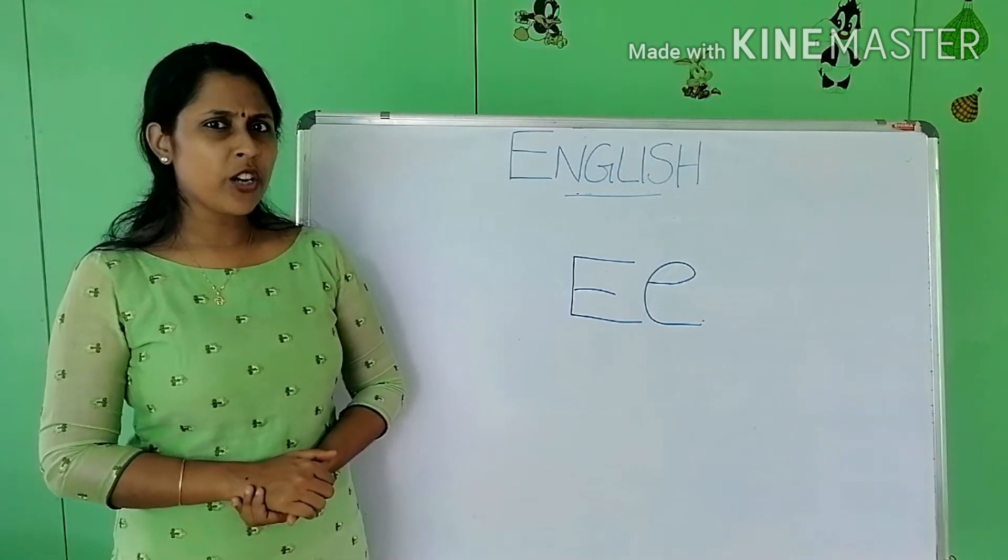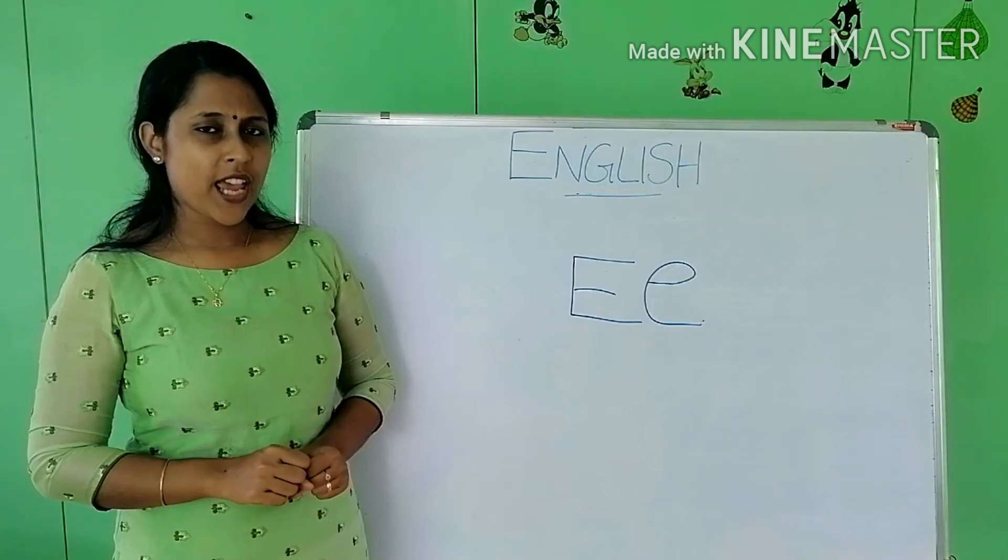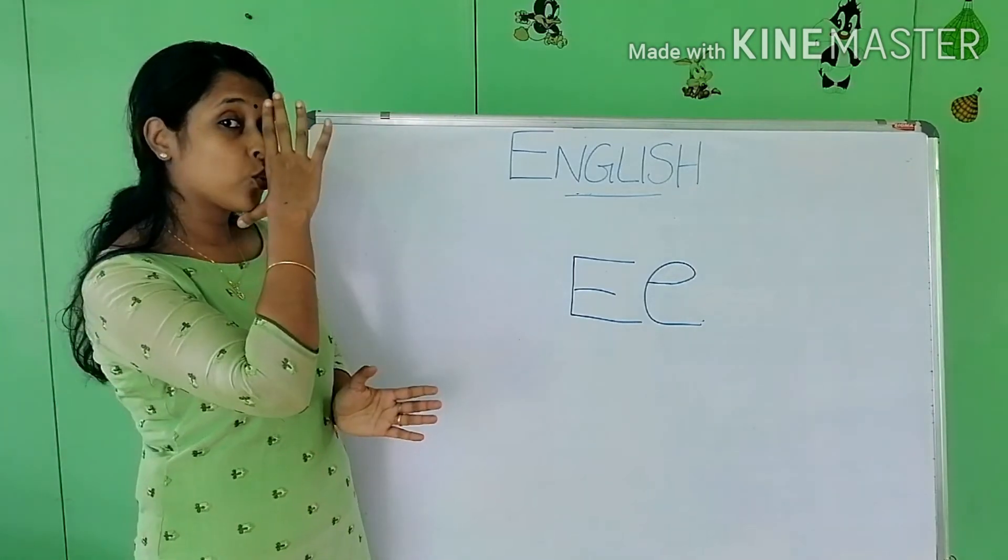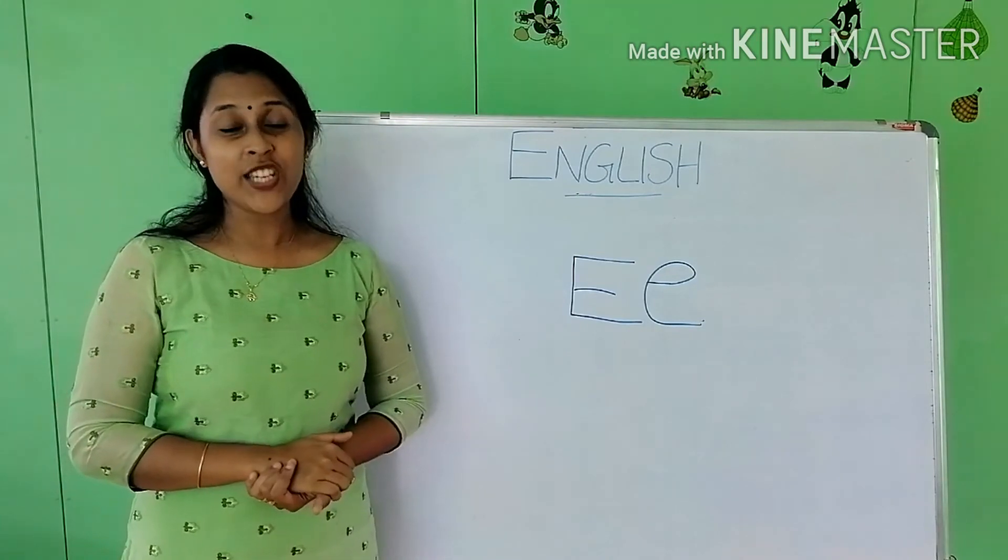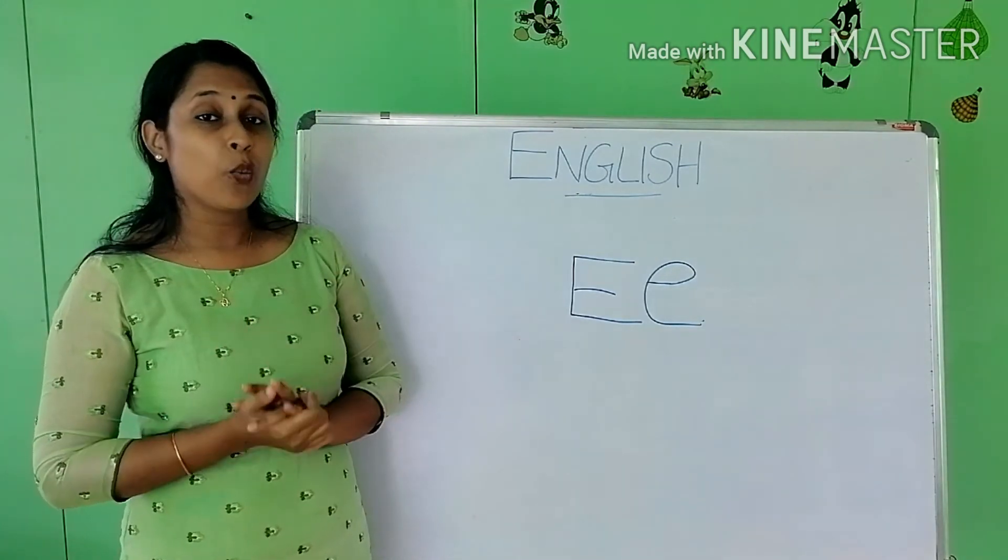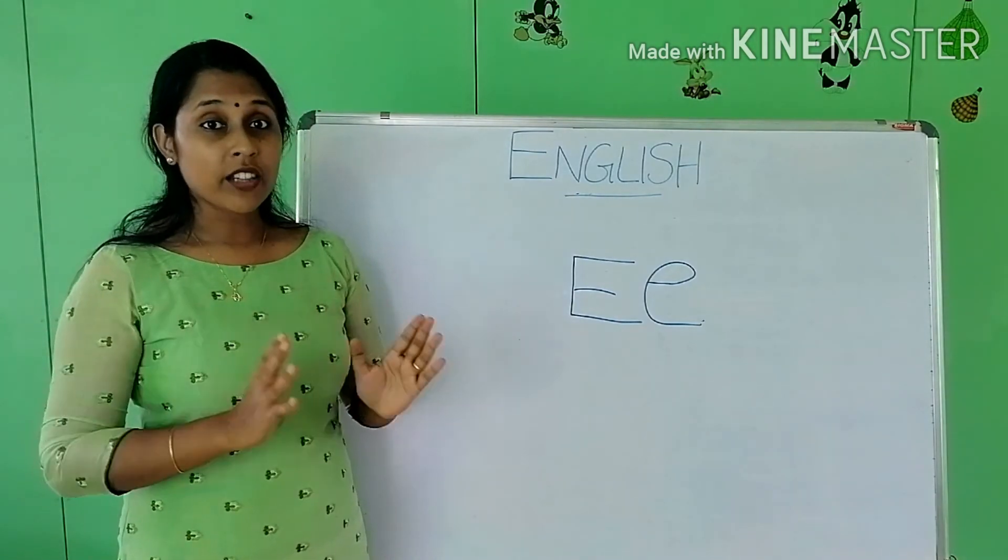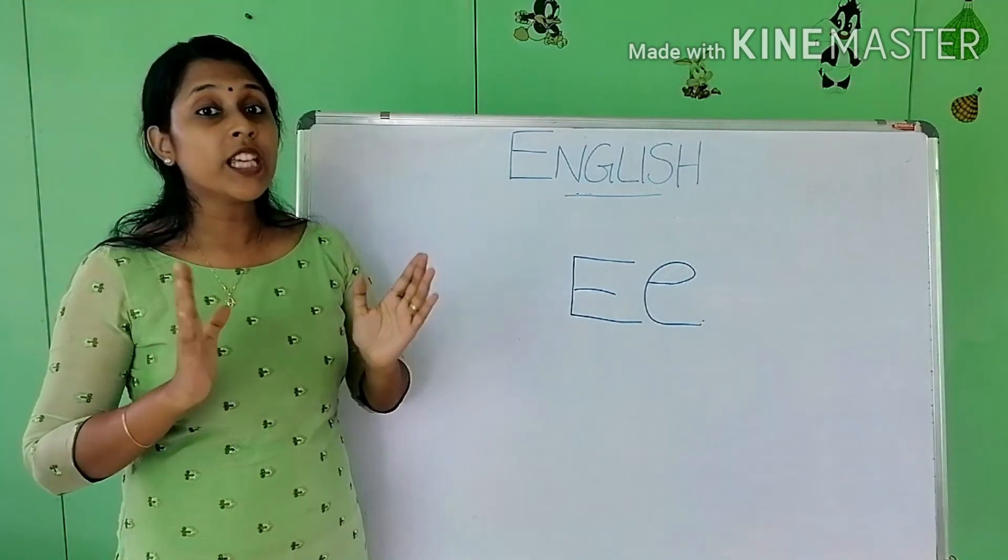Next, engine. You all know what is an engine, yes? The vehicles have engine. The train has got engine. So the word engine starts with the alphabet E. So these are the words that start with E.